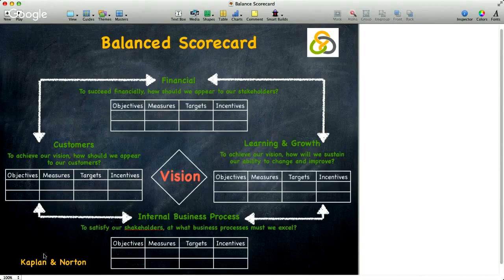Kaplan and Norton do not disregard the need for traditional financial data. However, these metrics they term as lag metrics. They are the measures of what has been. They measure the impact of prior decisions, but they won't help you make today's decisions, nor do they guarantee future outcomes.